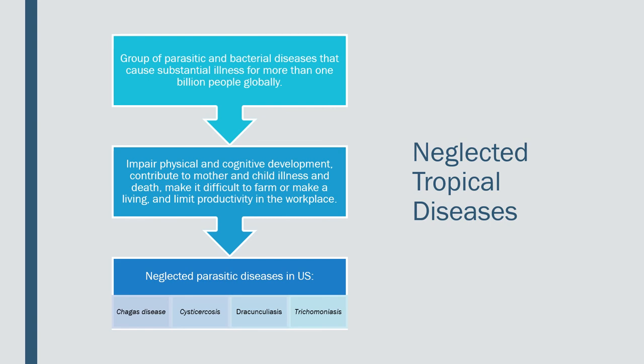Schistosomiasis, or snail fever — if you think the snail is to blame, you would be right. The eggs of this parasite get shed in the feces and urine of infected animals into the water where snails live. They infest the snails, grow and develop, then leave the snail, go back into the water, and contaminate it. When that water is ingested, that's how the host gets sick.